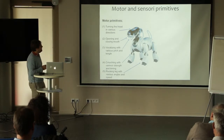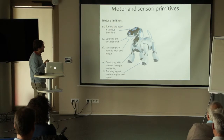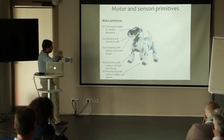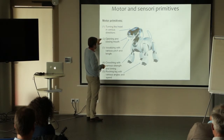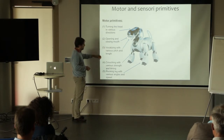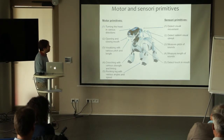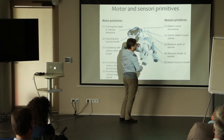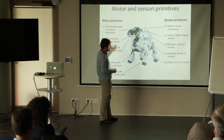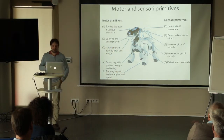The learning robot is equipped with a number of motor and sensory primitives. Each motor primitive is typically a dynamical system controlling various kinds of actions — turning the head in various directions, opening and closing the mouth, vocalizing with various fundamental frequency or lengths, crouching with various strength and timing, and rocking the leg in various angles and speeds. The robot also has sensory primitives for detecting visual movements, salient visual stimuli, sound properties like fundamental frequency or length, and touch — for example, a touch sensor in the mouth to detect whether it is grasping something.